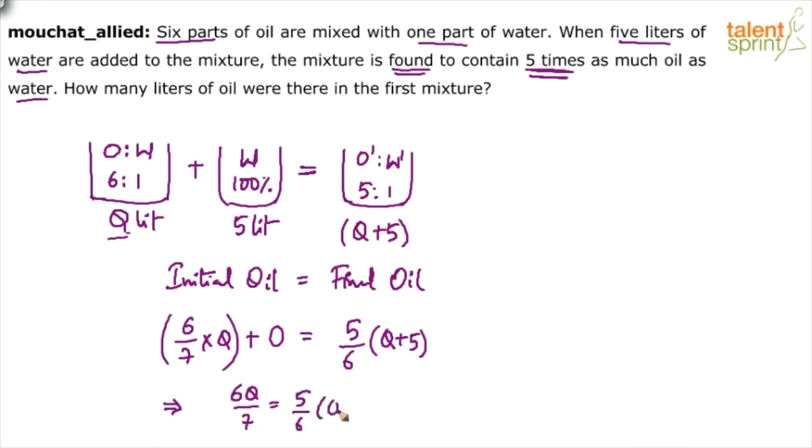Now just do the next step, right? Cross multiply. So 6 into 6, 36Q equals 7 into 5, 35. So 35Q plus 35 into 5, 175. So from this, what is Q? Q is 175, and that's your answer.